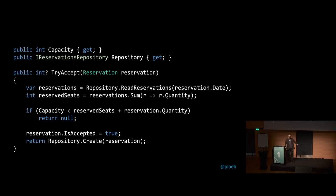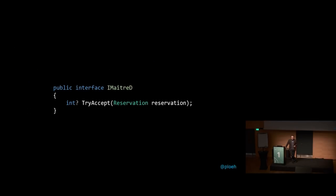You may wonder where the async and await are — there aren't any yet. I want to establish the normal dependency injection code base first. If we're doing domain driven design we might extract this behavior into an abstraction, defining an interface called IMaitreD that defines the TryAccept method. MaitreD is a French word for head waiter — the role that makes decisions about whether to accept reservations. That gave me the opportunity to use circumflex and unicode characters in code, which is always a bother but fun for slides.